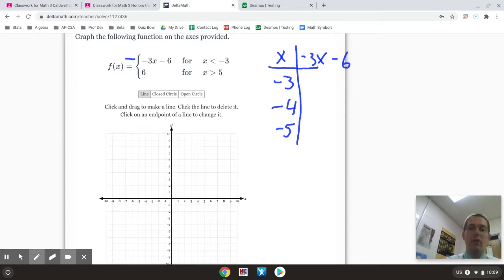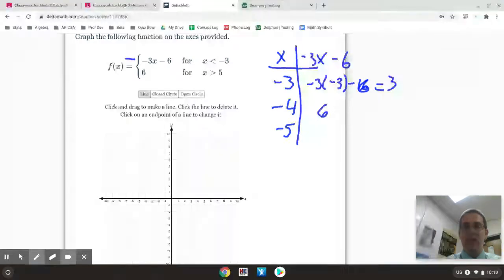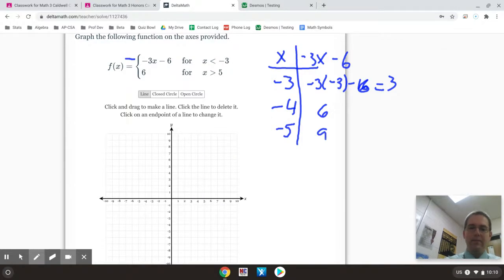So to evaluate for negative 3, I would do negative 3 times 3 minus 6, which is going to turn out to be 9 minus 6. Sorry, I about wrote 16. 9 minus 6 would be 3. Then if I plug in the 4, negative 3 times 4 is 12 minus 6 is 6. Plugging in the negative 5, negative 3 times negative 5 is 15 minus 6 is 9. So that gives me my values there.